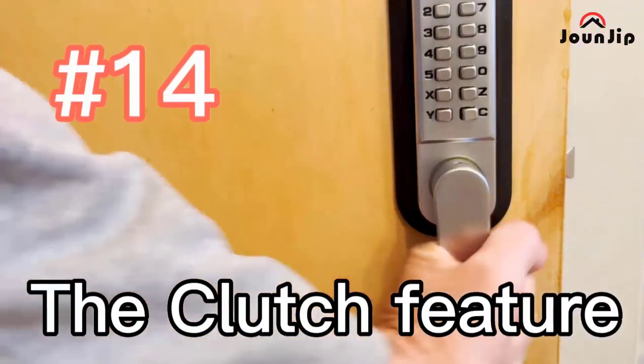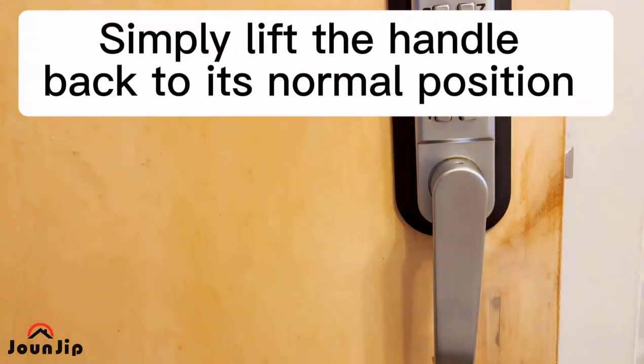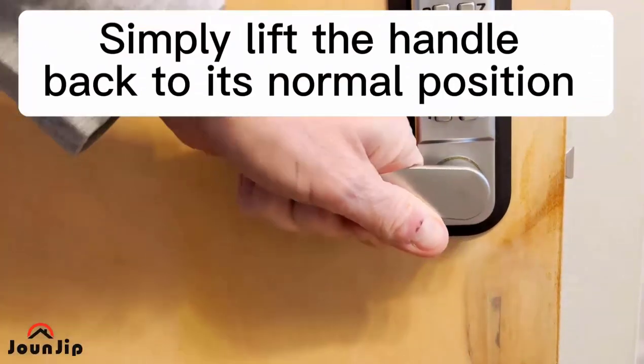Number fourteen: the clutch feature. The lever handle can be turned even when locked to help prevent it from being used as a foothold on a gate. Simply lift the handle back to its normal position.